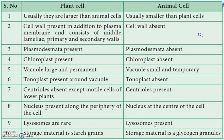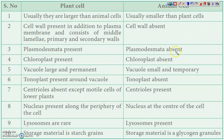Now we will see what are the differences. First, we will see the differences with respect to size and shape. Plant cells are comparatively larger in size; they are long and rigid in shape. Animal cells are usually much smaller and varying in shape.